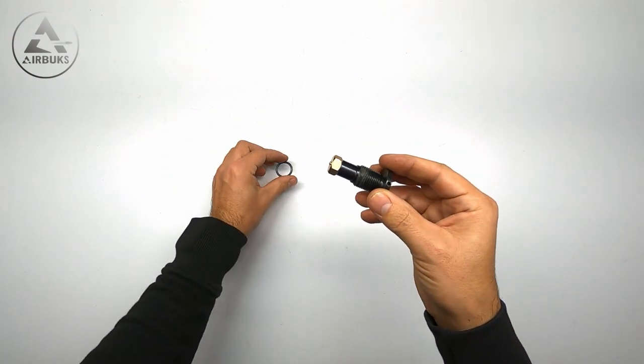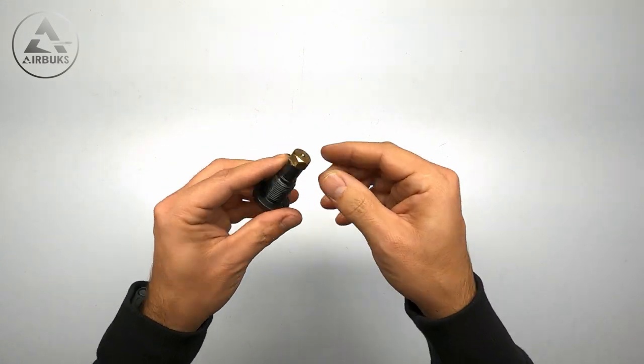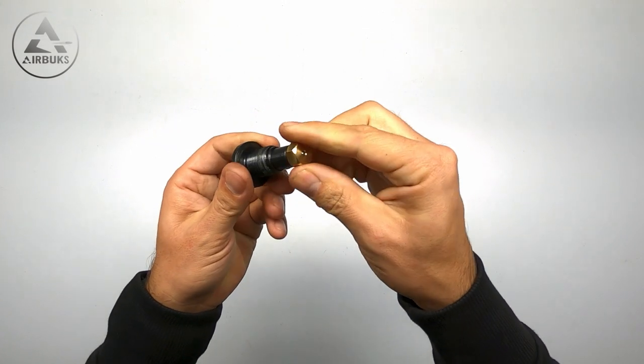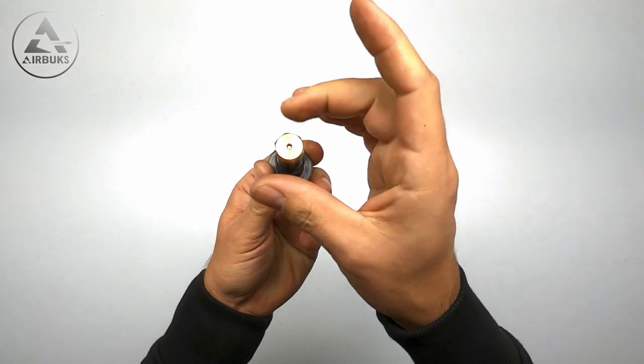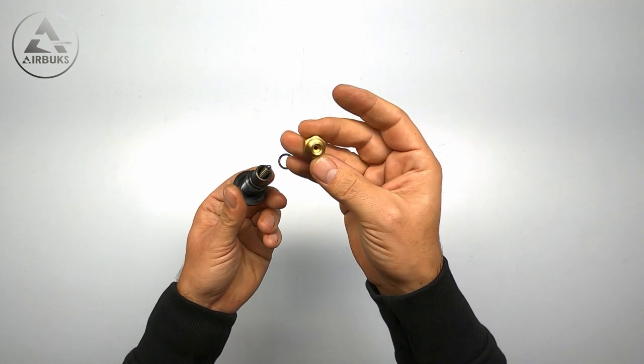This is how it looks. An o-ring that sits here and in the neck of the bottle to prevent the air from escaping. You can undo this brass part.